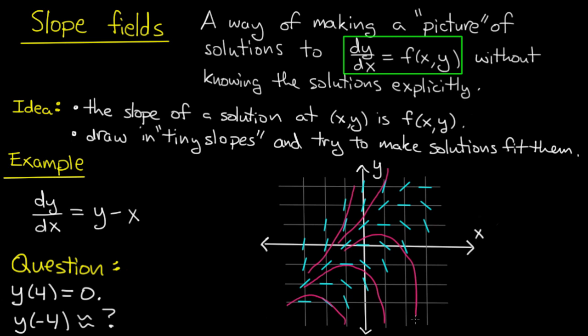Now we can use this to gain qualitative information. Not exact information, but we can make some deductions. So for instance, I could ask you the question: If y of 4 is 0, what is y of minus 4? So in other words, if I have a solution which passes through the point